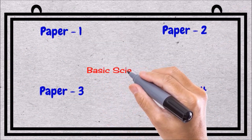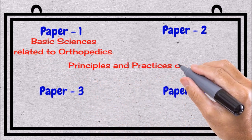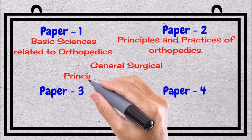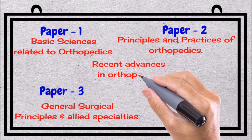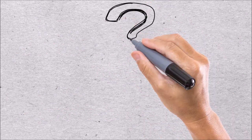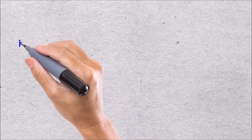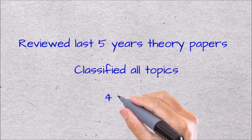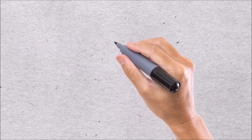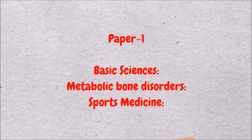As per the DNB orthopaedic curriculum by NBE, Paper 1 will contain basic sciences related to orthopaedics, Paper 2 will contain principles and practices of orthopaedics, Paper 3 will contain general surgical principles and allied specialties, and recent advances will be in Paper 4. However, this doesn't give a proper idea in terms of exam preparation. Hence, I reviewed the last 5 years of theory papers and classified all topics under 4 papers. Paper 1 contains basic sciences, metabolic bone disorders, and sports medicine.